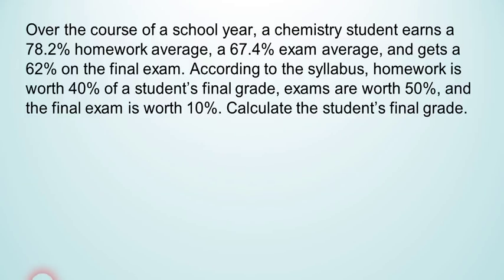But how do you average numbers when they don't have the same weight? Well, here's an example of that. Over the course of a school year, a chemistry student earns a 78.2% homework average, a 67.4% exam average, and gets a 62% on the final exam. According to the syllabus, homework is worth 40% of a student's final grade, exams are worth 50%, and the final exam is worth 10%. Calculate the student's final grade.